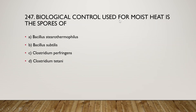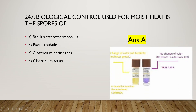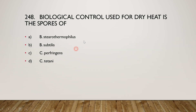Next question: the biological control used for moist heat is spores of Bacillus stearothermophilus, Bacillus subtilis, Clostridium perfringens, or Clostridium tetani? The right answer is option A — Bacillus stearothermophilus. Change of color and turbidity indicates growth in the ampoule. The ampoule containing Bacillus stearothermophilus is placed into the autoclave or steam sterilizer to verify whether autoclaving was done properly. If the color changes to yellow the autoclave did not work properly; if color remains blue, autoclaving was done properly.